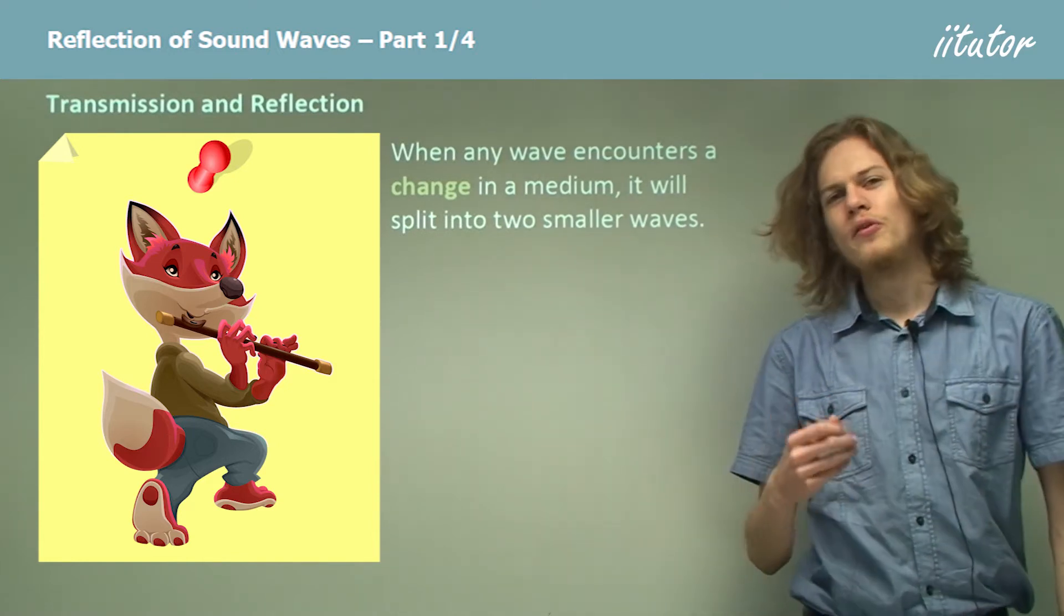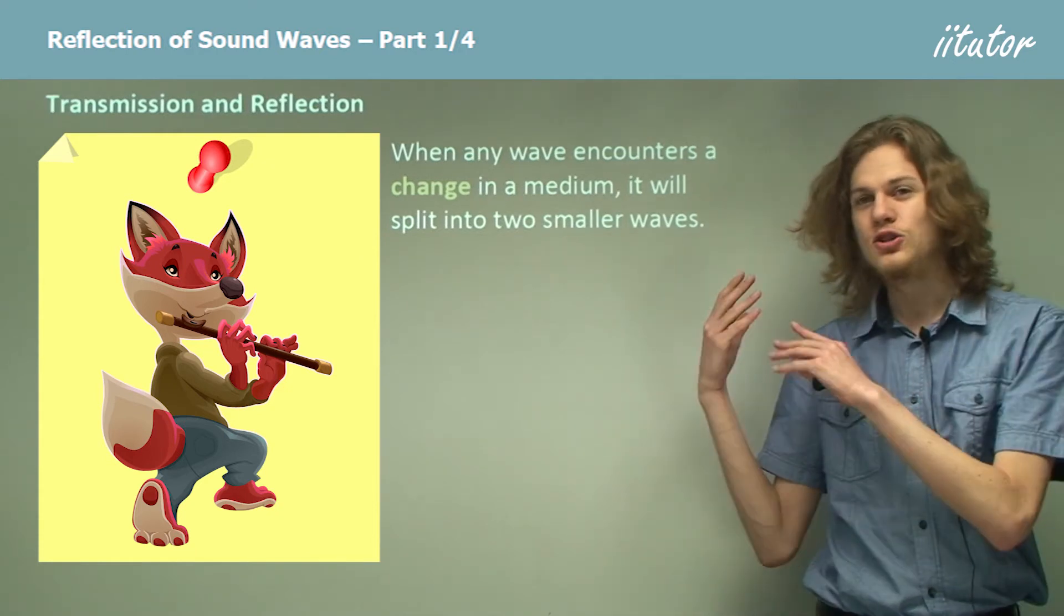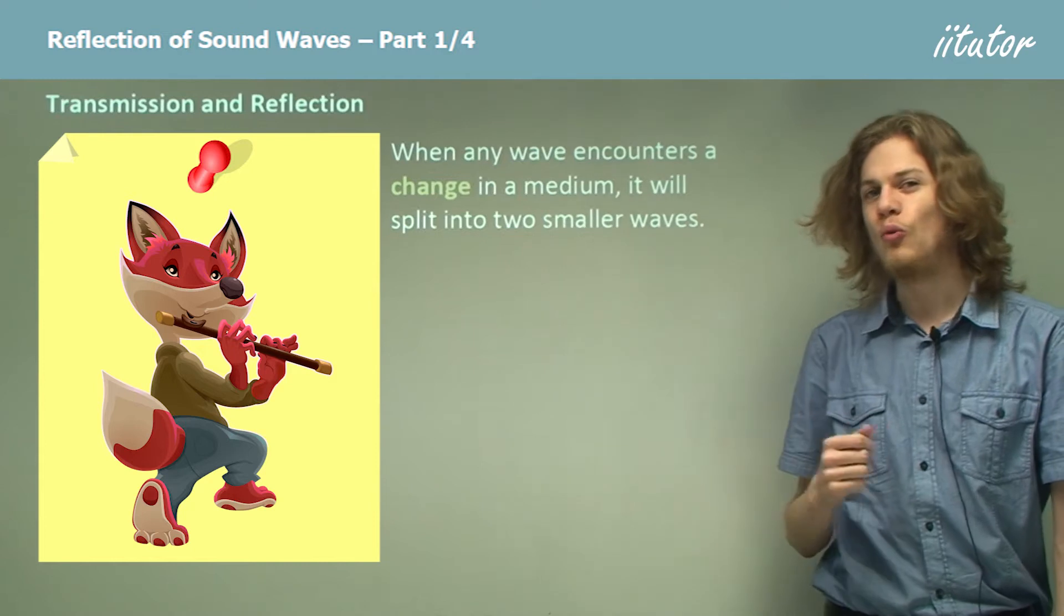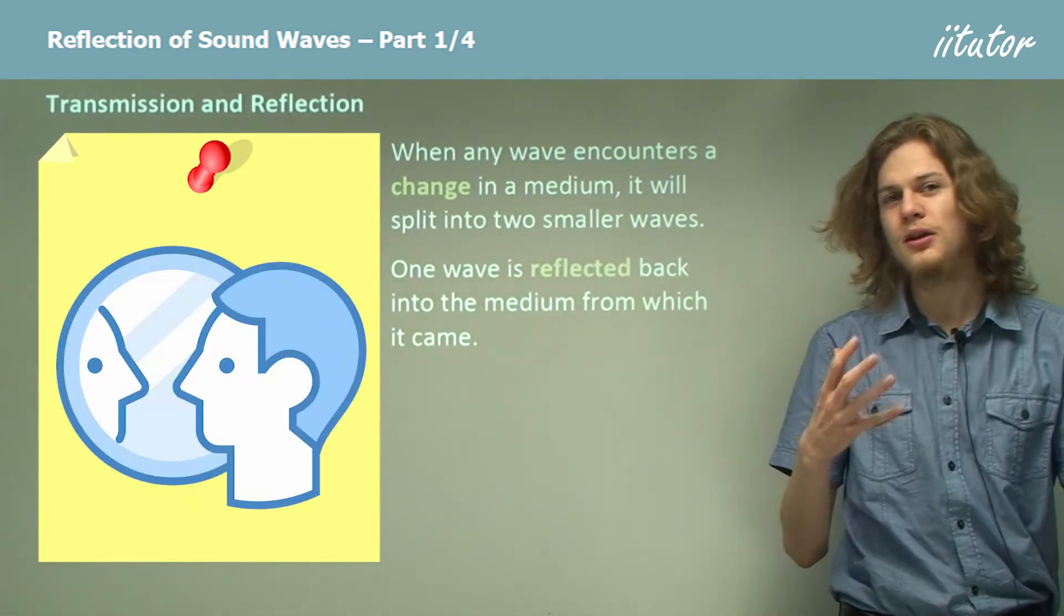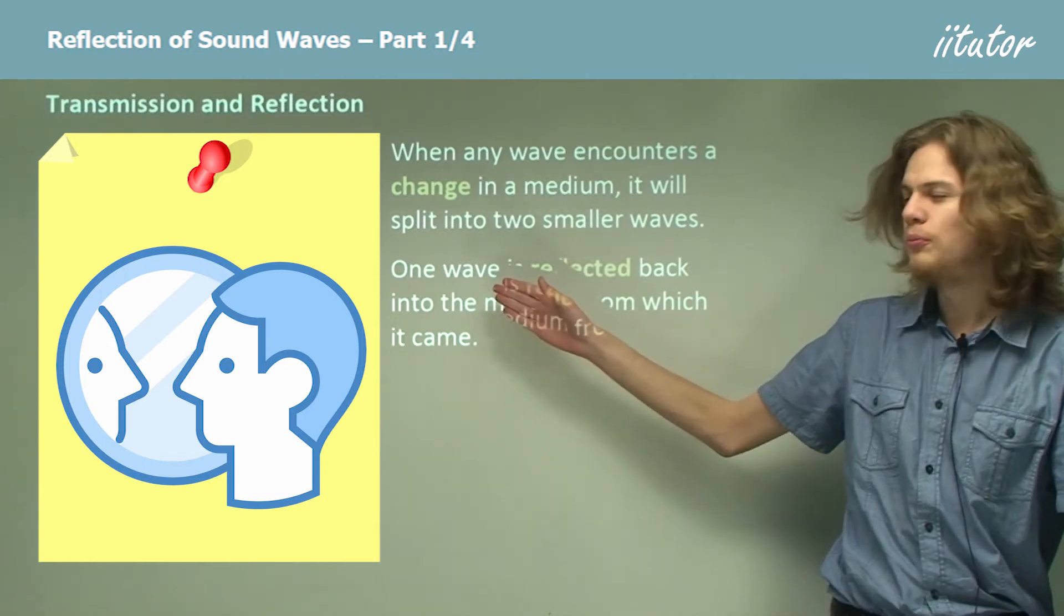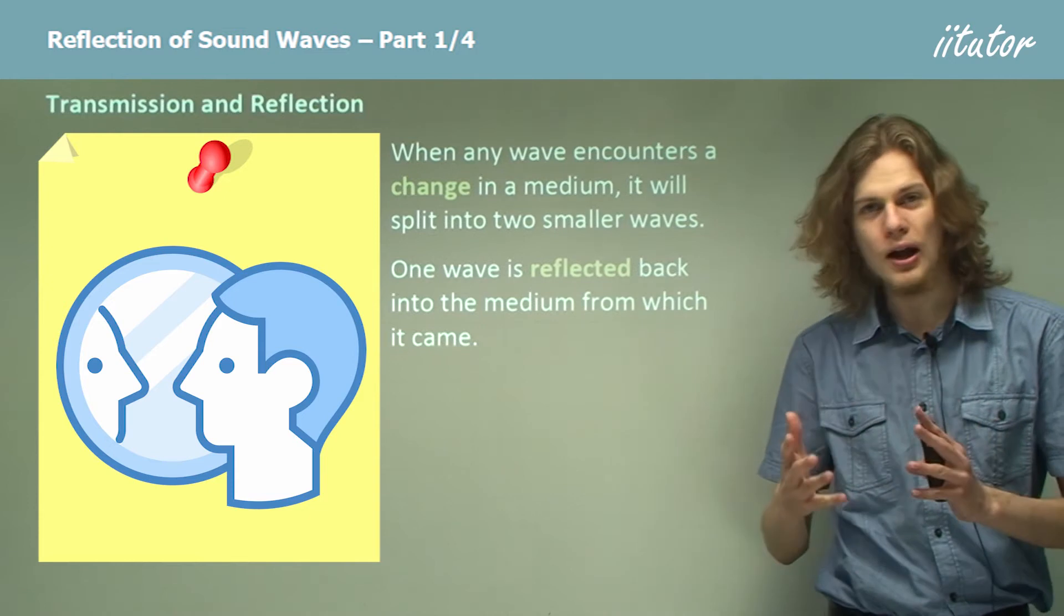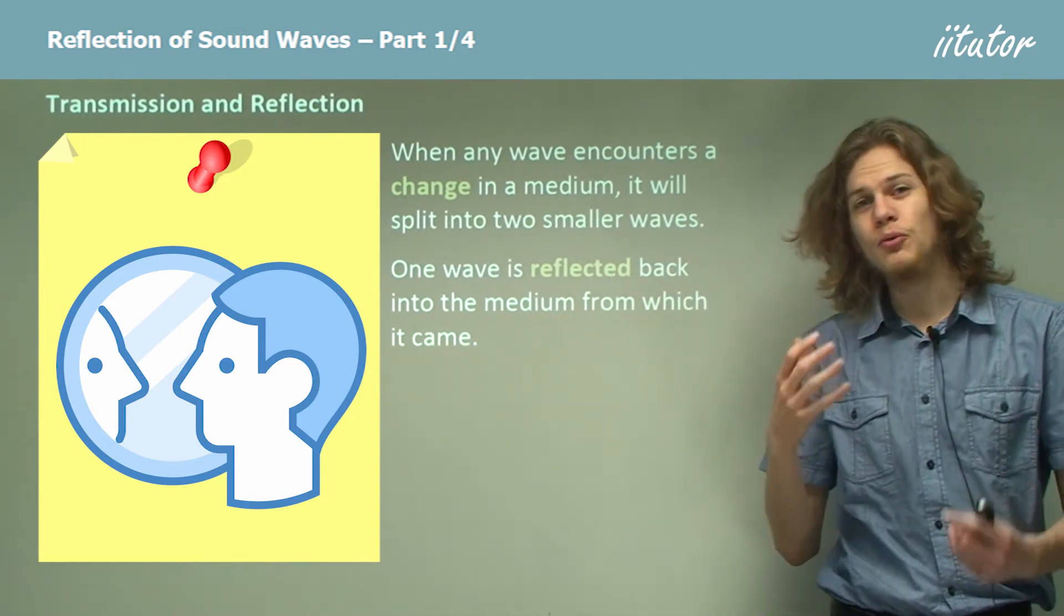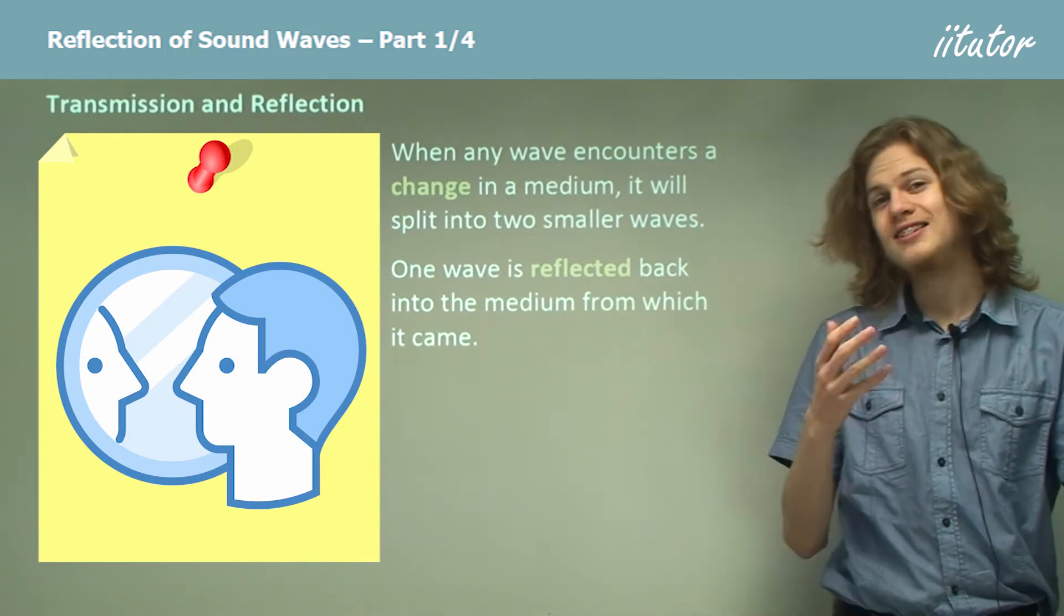Now it's a basic fact of how waves work that when they go into a different medium, that is a different thing to propagate through, then they will split into two smaller waves. One wave is reflected back into the same medium. So we can see that for these little beams of light in the photograph, which are of course a type of wave, they come in from the left and some of them get reflected to the top of the image because they stay in the same medium, air.